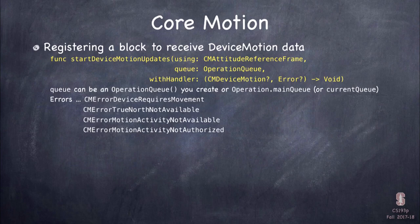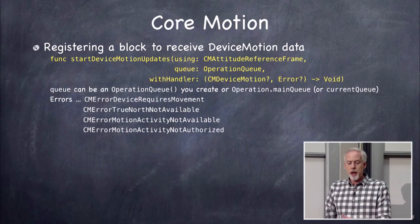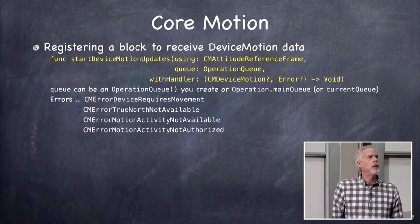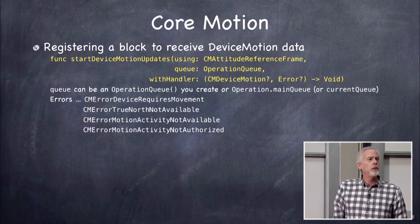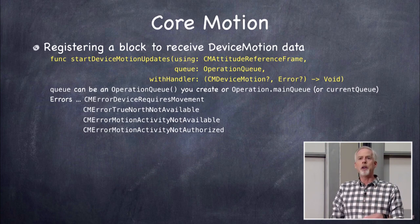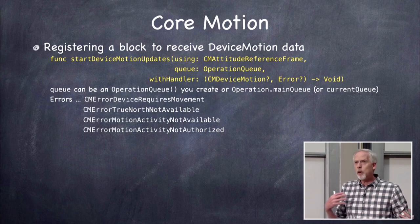What errors can come back? In device motion, if you're asking for a true north reference frame and trying to get heading, you might get a 'true north not available' error — maybe because it doesn't know your location via cell sites, Wi-Fi, or GPS. You can also get 'not authorized' and 'not available'. With physical devices and the real world being variable, you really want to handle errors here — don't blindly ignore them.